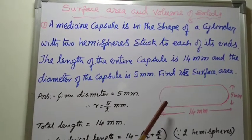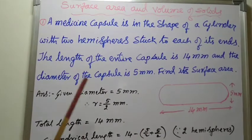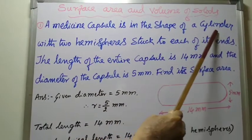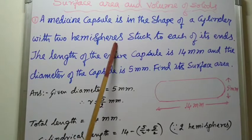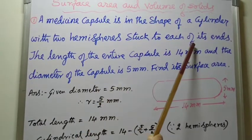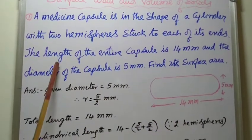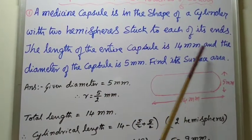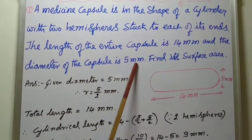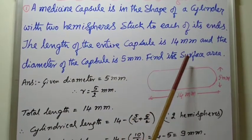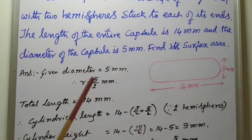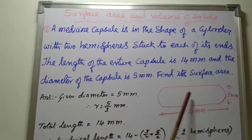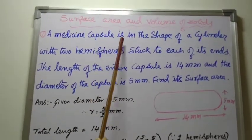So this is another most important problem. A medicine capsule is in the shape of a cylinder with two hemispheres stuck to each of its ends. The length of the entire capsule is 40 mm and the diameter of the capsule is 5 mm. Find its surface area. If you read the problem once again, whatever the given figure also, medicine capsule, it is a solid.